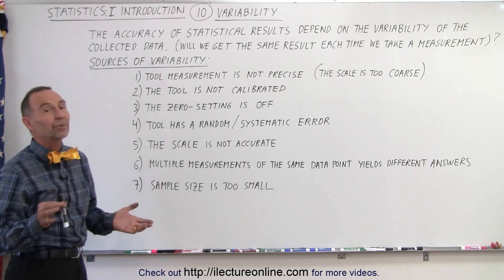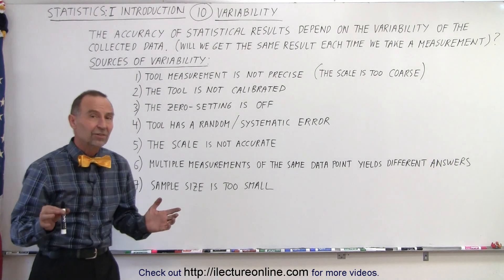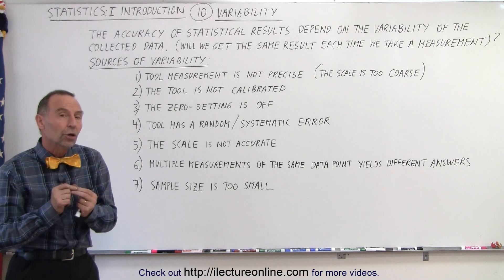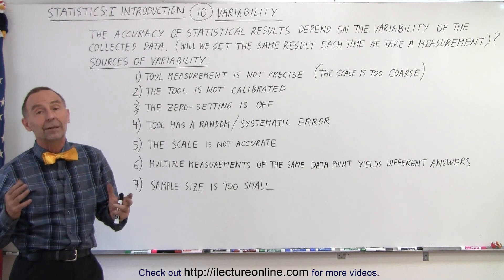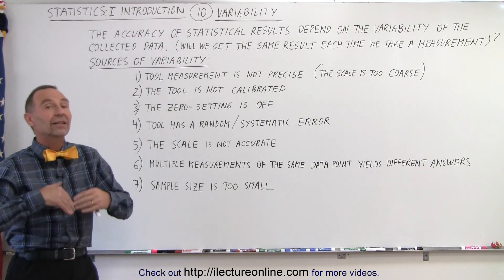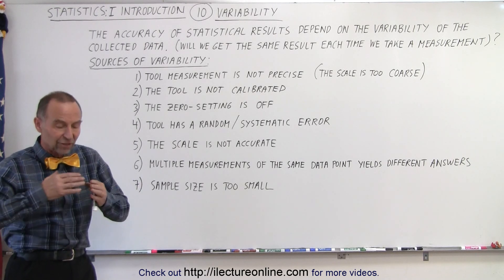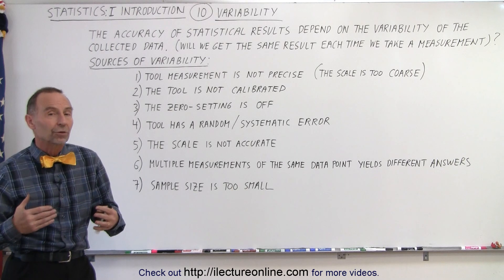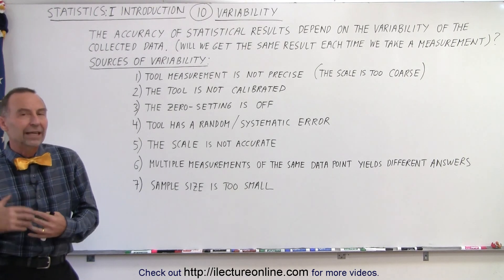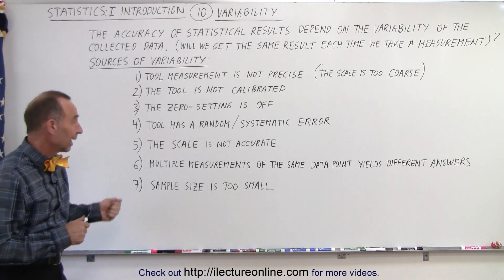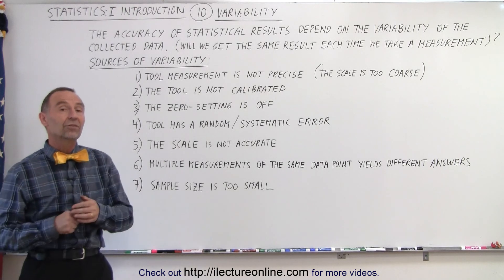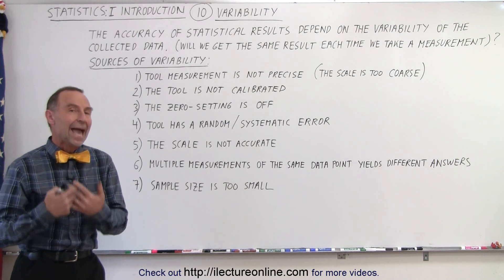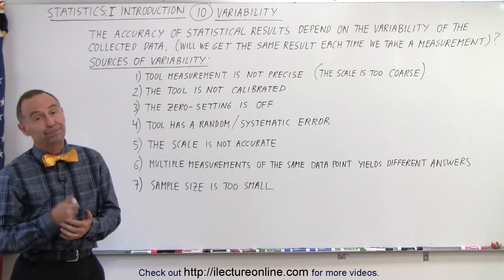And finally, sample size. This is very important. If the sample size is very small, you'll probably have a lot of variability because a small sample may not necessarily represent the total population. As the sample size gets bigger, you're more likely to get a more representative result and less variation in your measurements. That's why all these things need to be considered when talking about variability and the accuracy of your measurement.